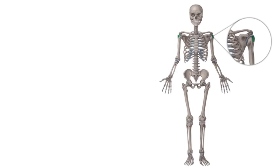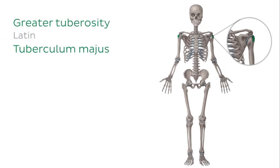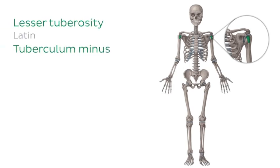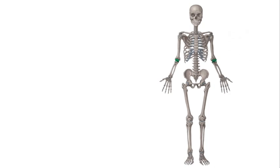On the lateral aspect of the humerus is a bony prominence known as the greater tuberosity, highlighted in green. On the anterior aspect is another bony prominence known as the lesser tuberosity. Between these tuberosities lies a deep groove called the intertubercular sulcus which provides a channel for many structures. At its distal end the humerus articulates with the radius and ulna of the forearm forming the elbow joint.